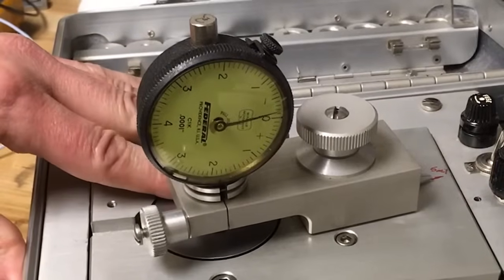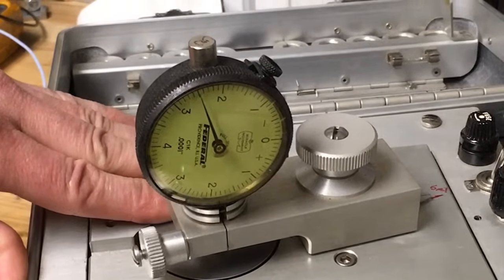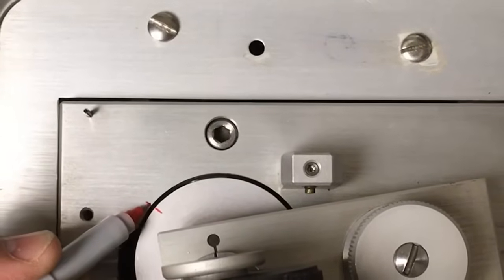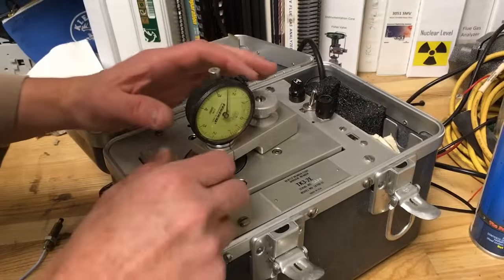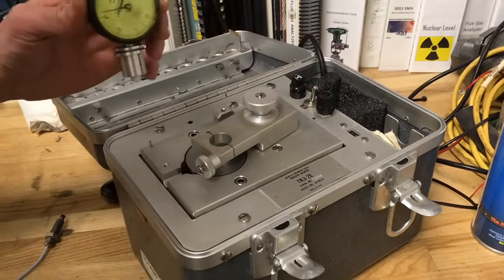Rotate the disc to the midpoint of the travel, which should be two point five thousandths of an inch. Place a reference mark on the disc for future use. Loosen the locking screw, then remove the dial assembly, being careful not to move the swing arm.